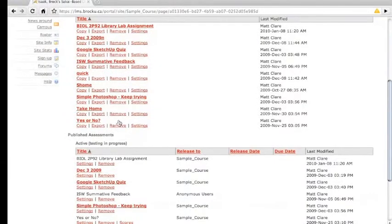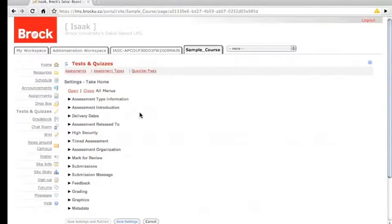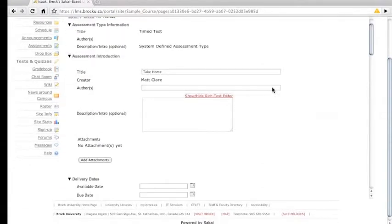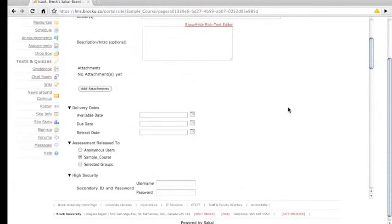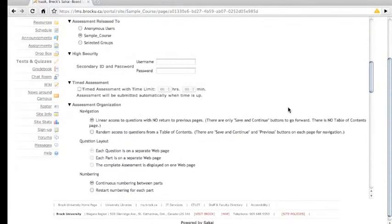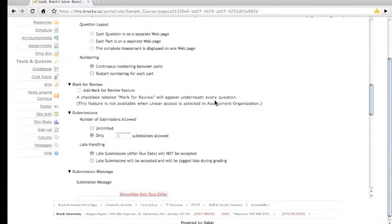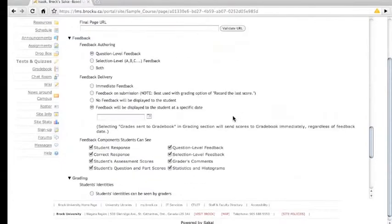Once they're all created, I can go into their settings and set a number of things, like when it's available, if I want to use a password before students can take it, I can do a timed assessment, how do I want to present it, what kind of feedback do I want students to get? Do I want them to see what the correct response is? Do I not want to? Do I want them to be able to see what they submitted and the correct response, or just what they submitted?